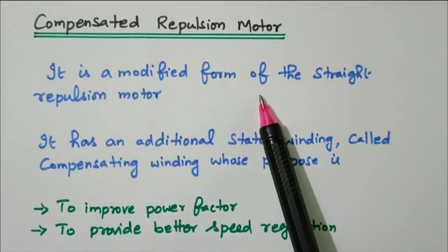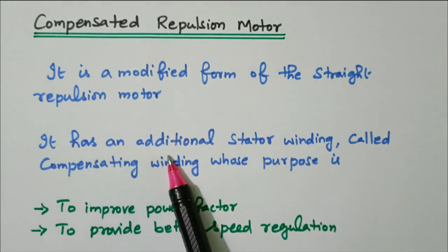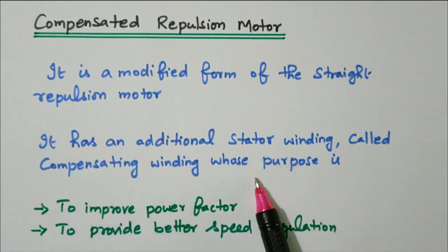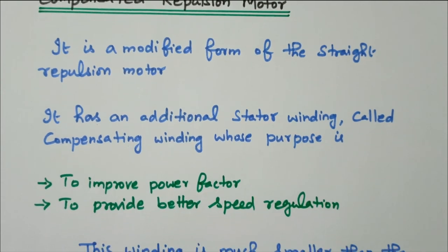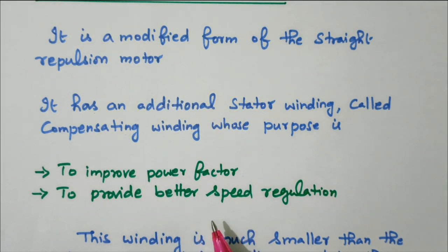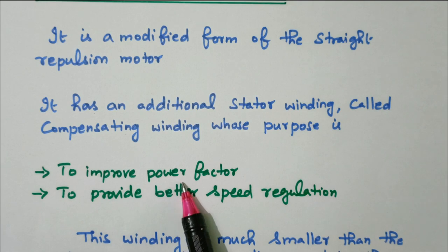The compensated repulsion motor is a modified form of the standard repulsion motor. It has an additional stator winding called the compensating winding, whose purpose is to improve the power factor and to provide better speed regulation. The compensating winding is what distinguishes this motor from the standard repulsion motor.